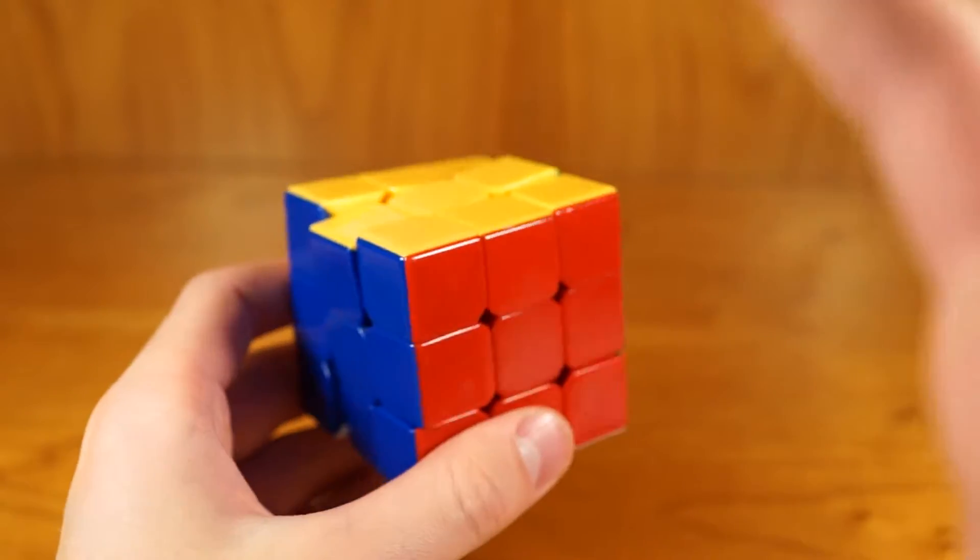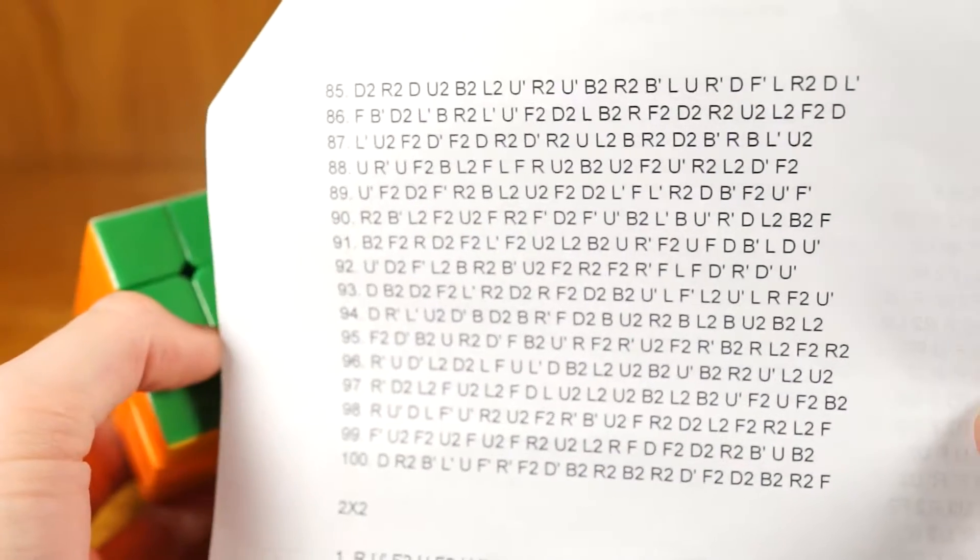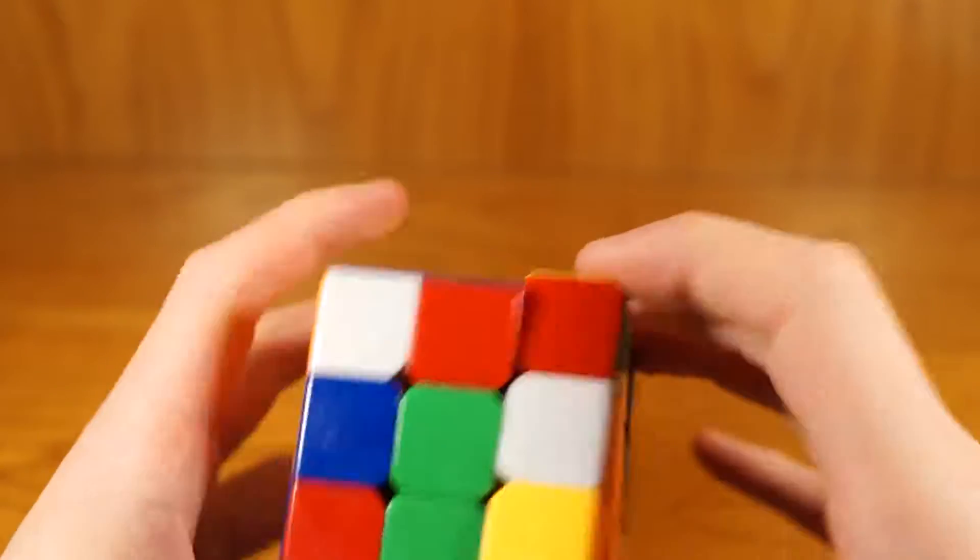So let's get into some example solve. White top, green in front, scramble 93. So let's get started.